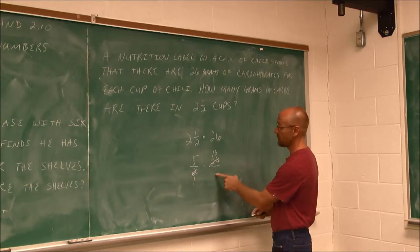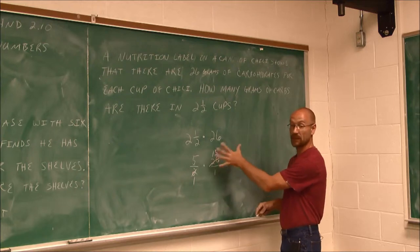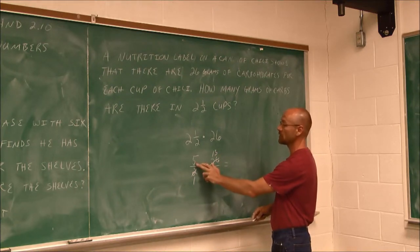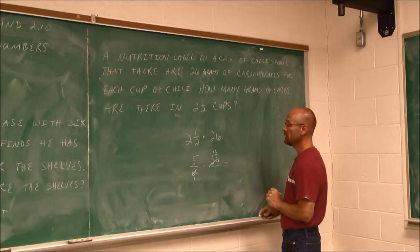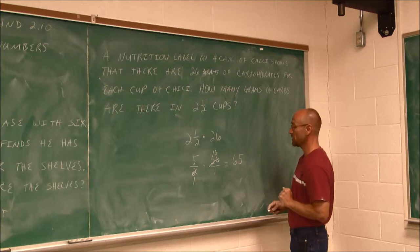And now my denominators are both 1. So 1 times 1 is 1. And anything divided by 1 is that number. So we just have to concern ourselves with our numerators now. 5 times 13 is going to be 65. So 65 over 1 is just 65.